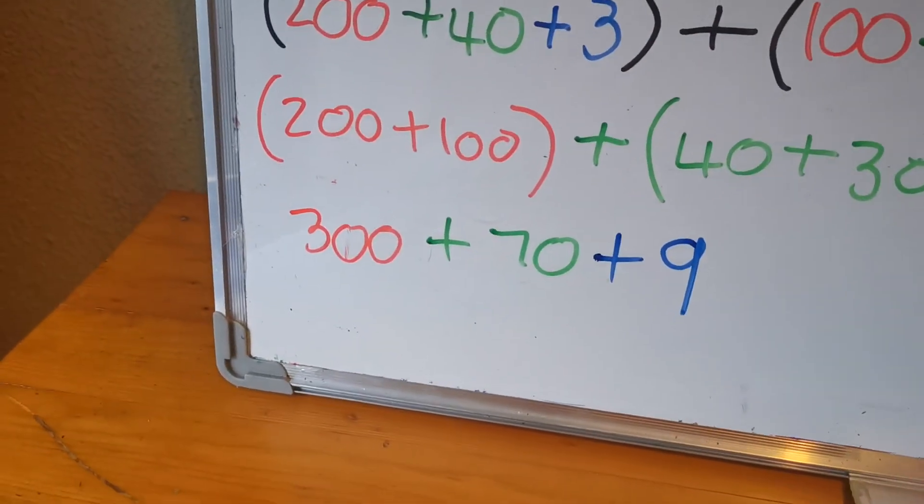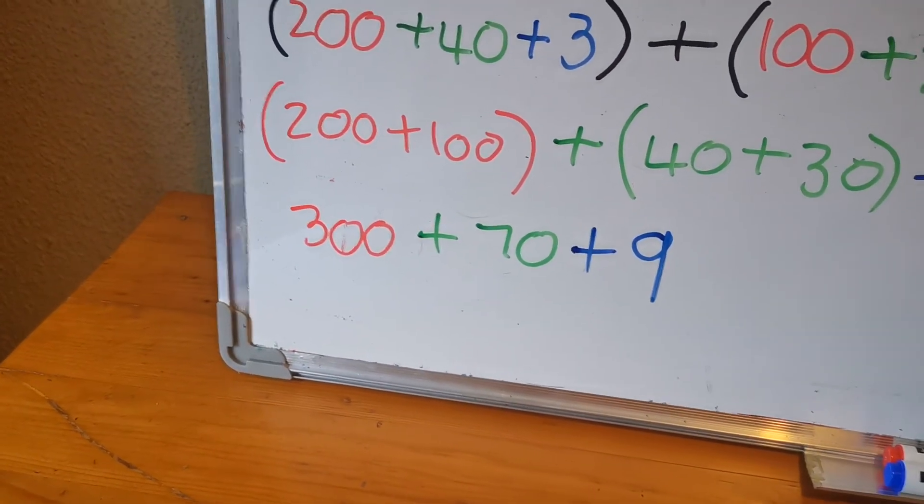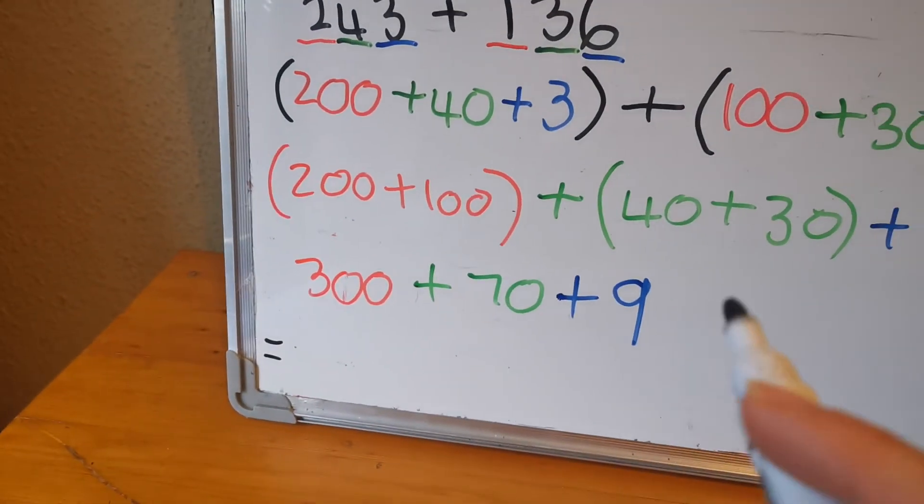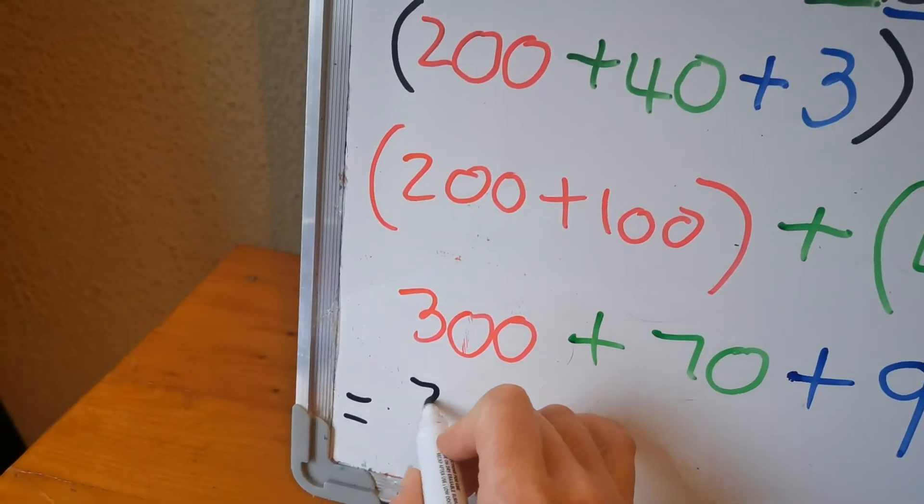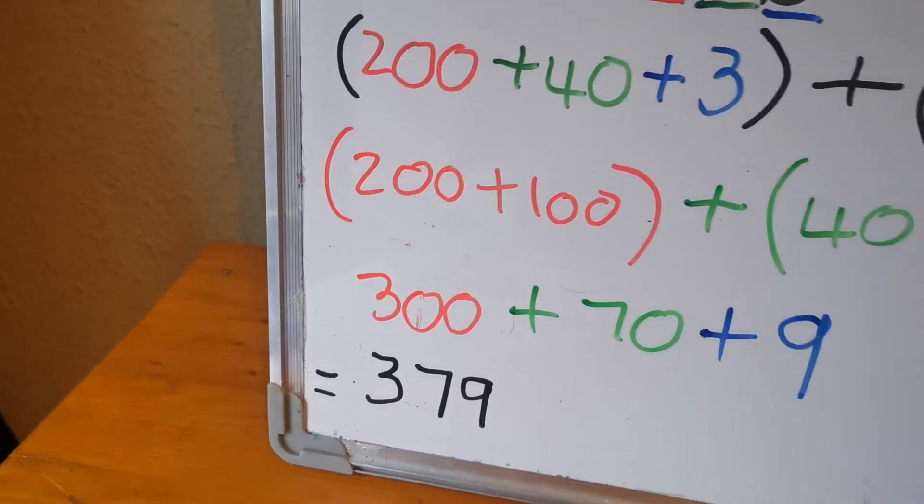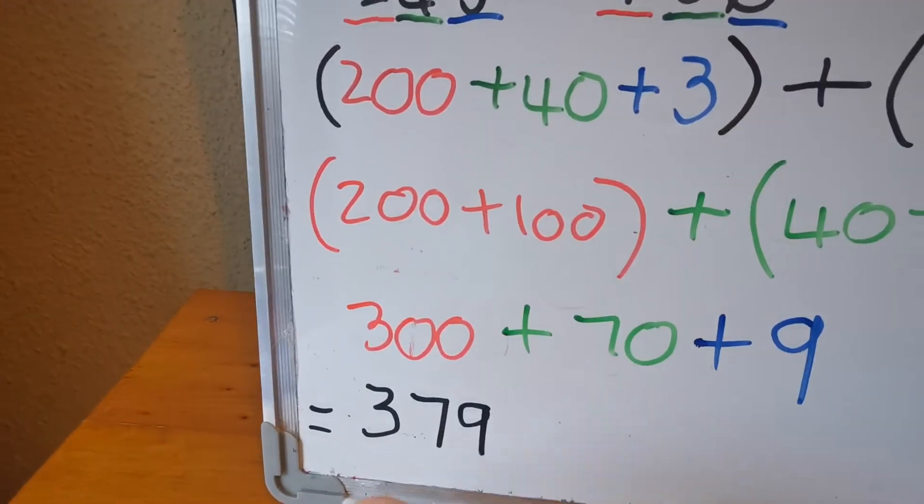And now you're going to add the number together and write it at the bottom. So 370 plus 9 gives you 379. You just add them all together.